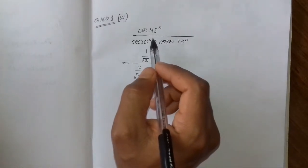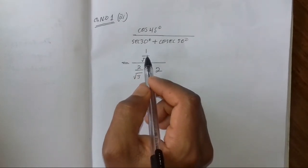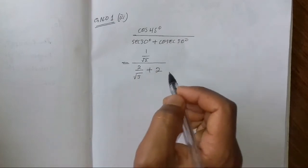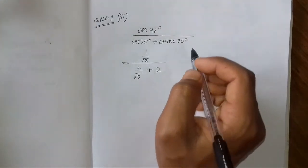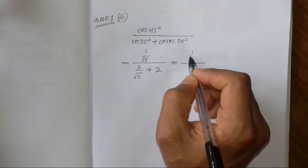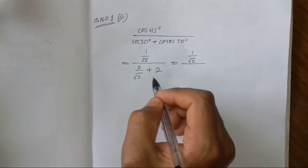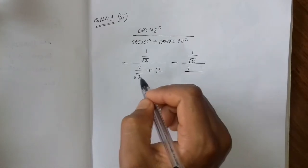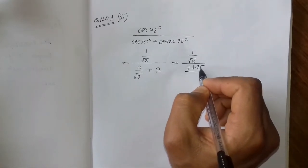If you want to see the table, the value for cos 45° is 1 by root 2, and sec 30° is 2 by root 3. When you substitute, you get 1 by root 2 divided by 2 by root 3, plus 2 by root 3, which gives 4 by root 2 and 2 plus 2 by root 3.